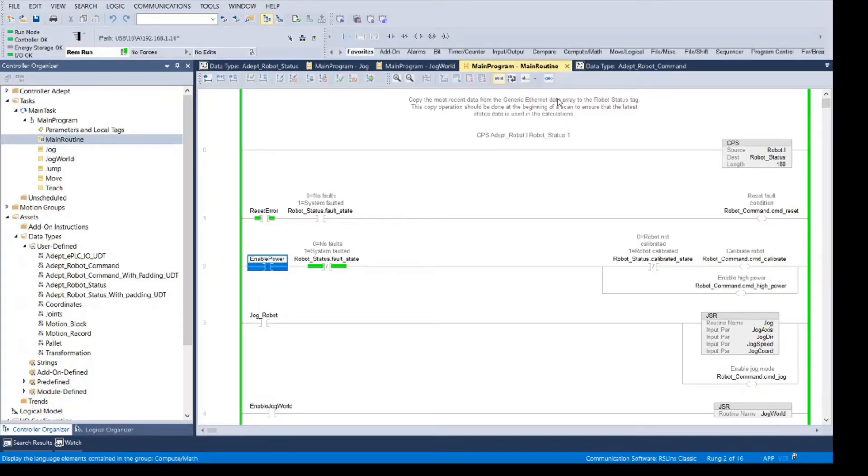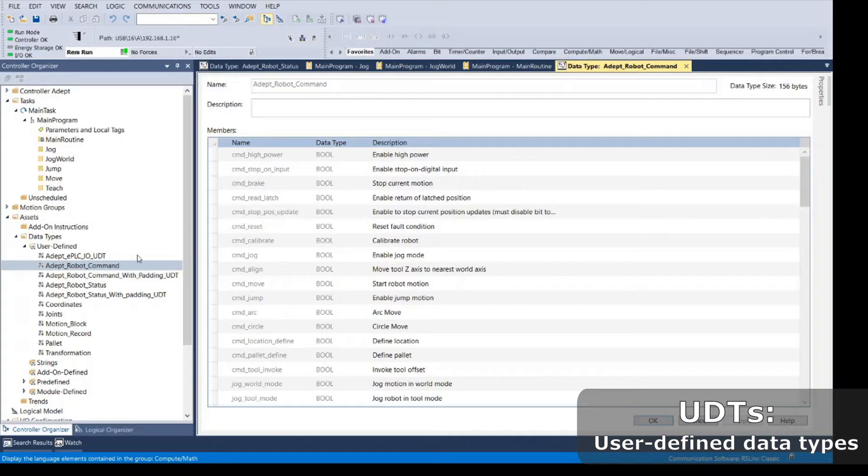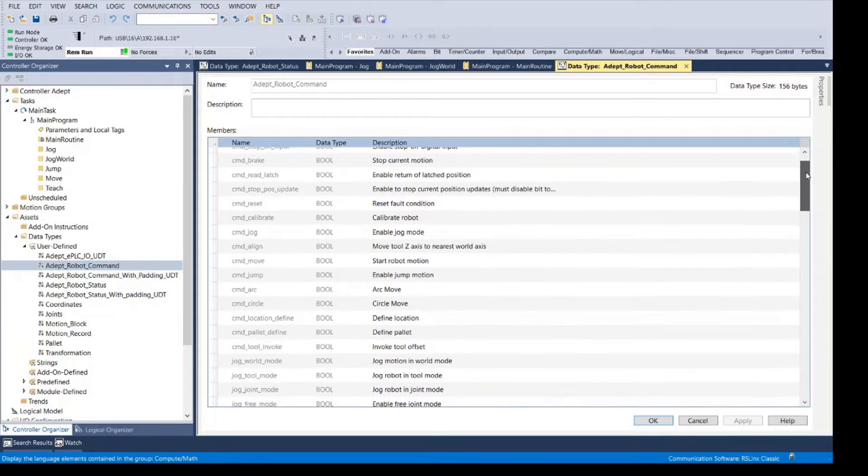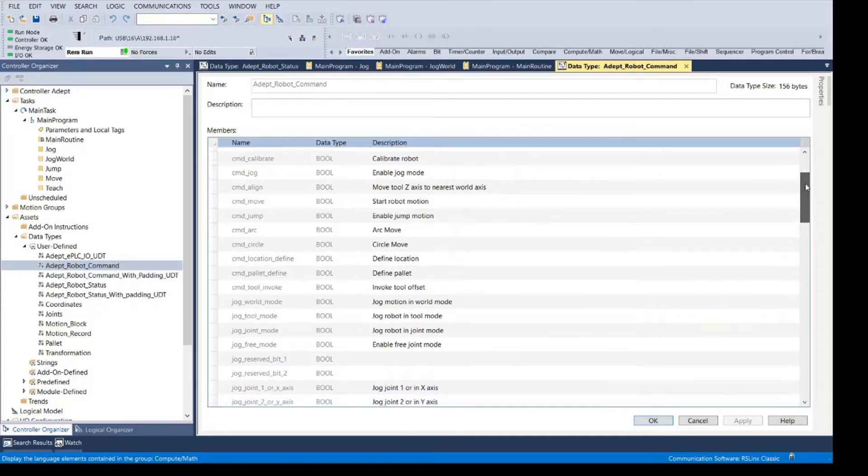So, how does it work? In Studio 5000, we utilize user-defined data types, or UDTs, which are a list of all the commands and status messages that are passed back and forth between the robot and the PLC each scan.